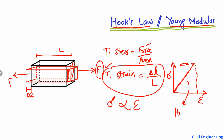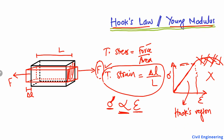This region is called the Hooke's Law region. After this, if more load is applied, the deformation increases and Hooke's Law is no longer applicable because stress is no longer directly proportional to strain — this becomes the non-Hooke's region. So in the region where stress is directly proportional to strain, Hooke's Law is applicable.